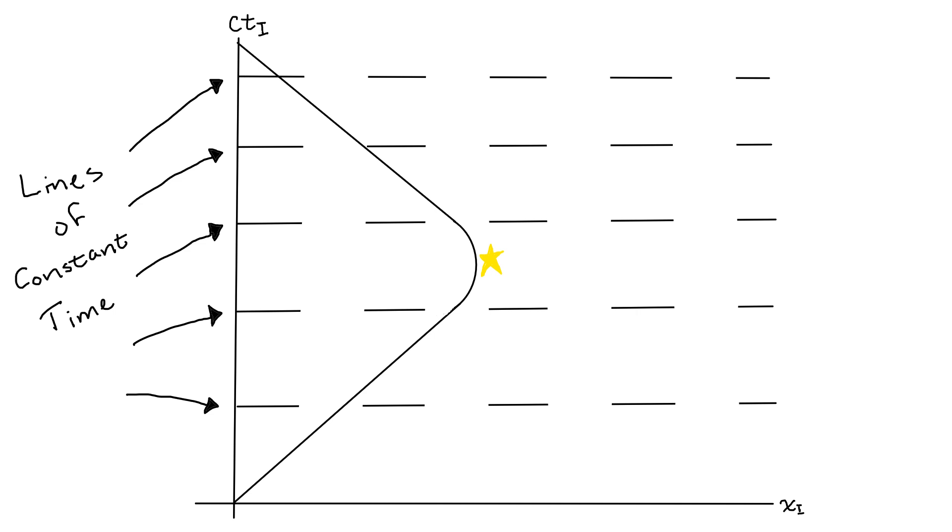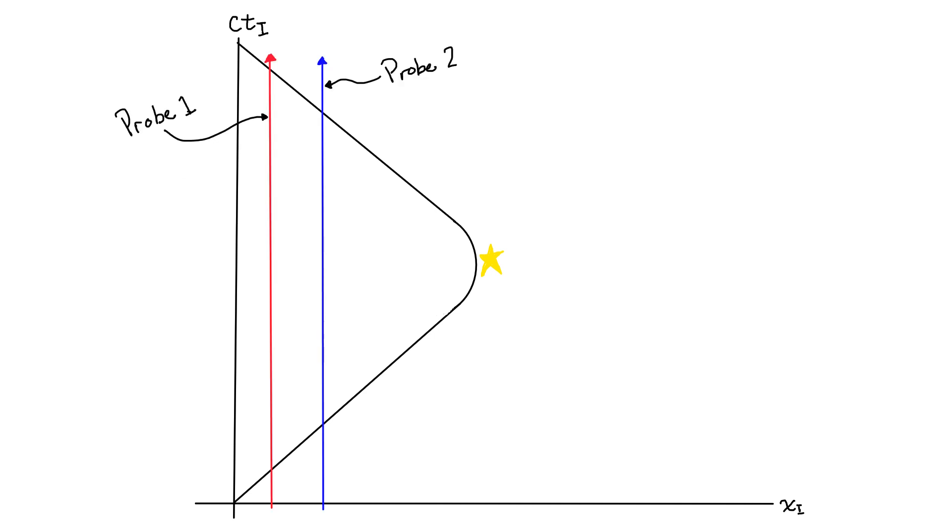Let's say that there are also two probes, call them probe 1 and probe 2, that are not moving relative to Isaac. Now, let's say these probes pulsed lights in regular intervals so that the light pulses will sit on horizontal lines of constant time in Isaac's frame.